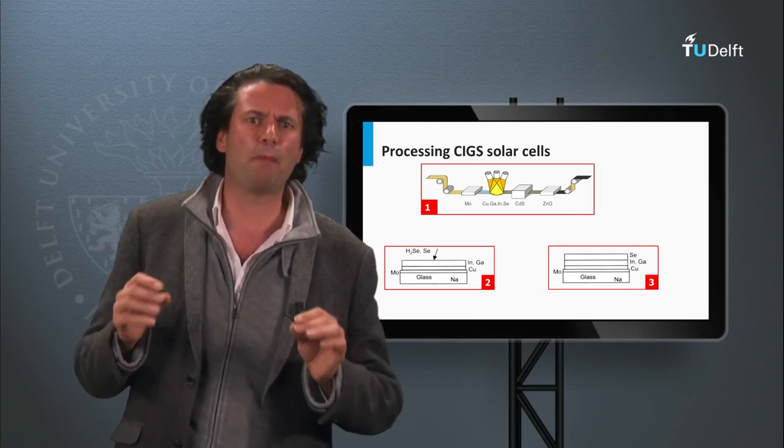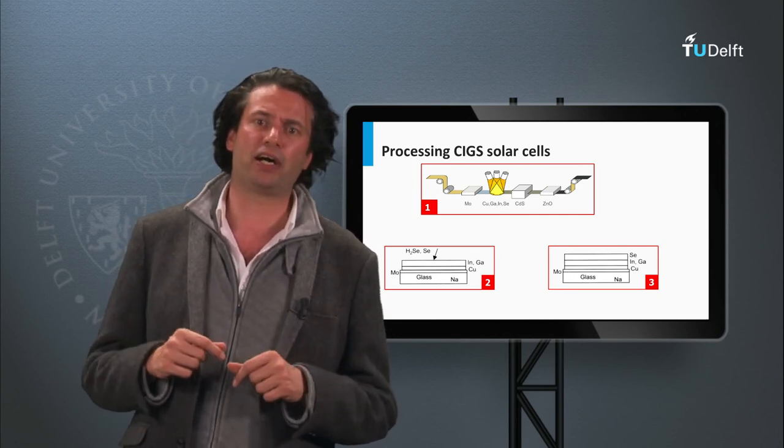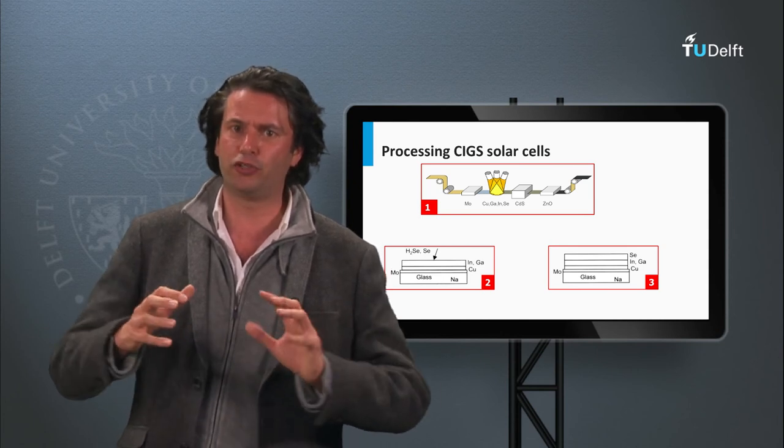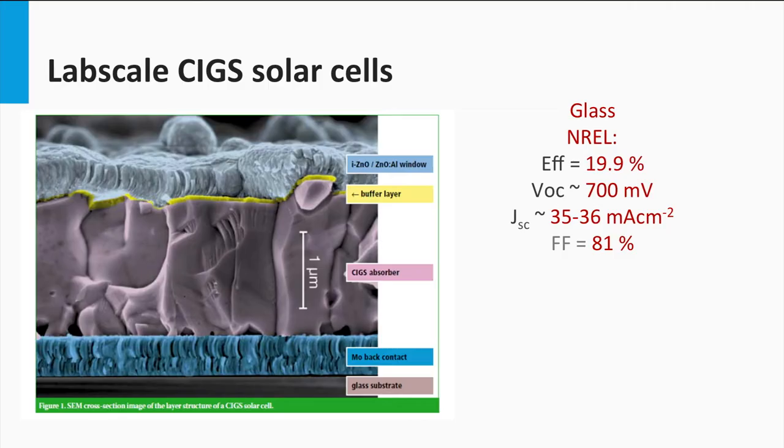The powder is heated up to a temperature below the melting point. Atoms in the particles can diffuse across the boundaries of the particles. As a result, the particles fuse together, forming one big solid.